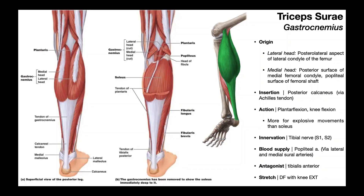In this video, we're going to be talking about the triceps surae. Surae refers to the calf, or the posterior aspect of the lower leg. Triceps refers to a three-headed muscle. This is actually a muscle group, so it's not one muscle, it's actually two. One of the muscles has one head, and then the gastrocnemius has two heads, so two plus one is three.